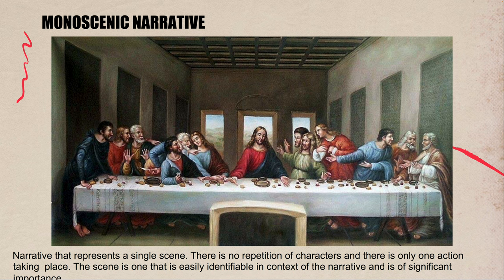Moving on to actually constructing narratives. Monoscenic narrative is basically like a photograph — a narrative that depicts a single scene with no repetition of characters or elements, and only one action taking place. It's fairly easily identifiable. In the classic image of The Last Supper, to oversimplify, we have a group of people having dinner and you're taking a snapshot.